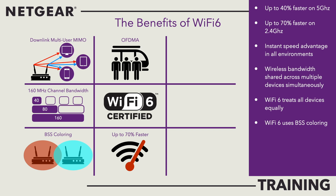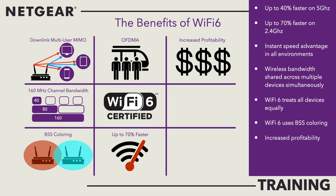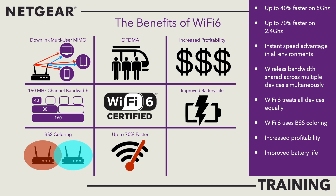Wi-Fi 6 access points and mesh systems each have 50% more coverage, meaning fewer of them should be needed compared to what businesses currently have installed. Less is more, making Wi-Fi 6 a smart investment. Wi-Fi 6 also improves on battery life in the way it communicates with other devices, ensuring that they are only active when they need to be, rather than always being on and alert for a wireless transmission.